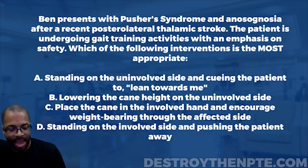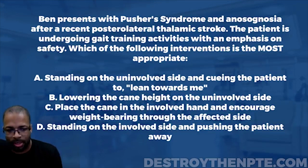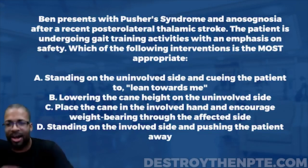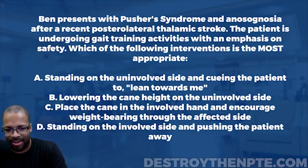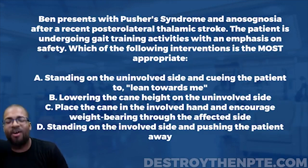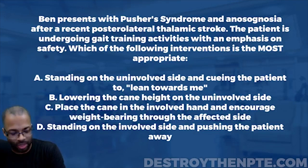Answer choice A is standing on the uninvolved side and cuing the patient to lean towards me. B is lowering the cane height on the uninvolved side. C is place the cane in the involved hand and encourage weight bearing through the affected side. And D is standing on the involved side and pushing the patient away.